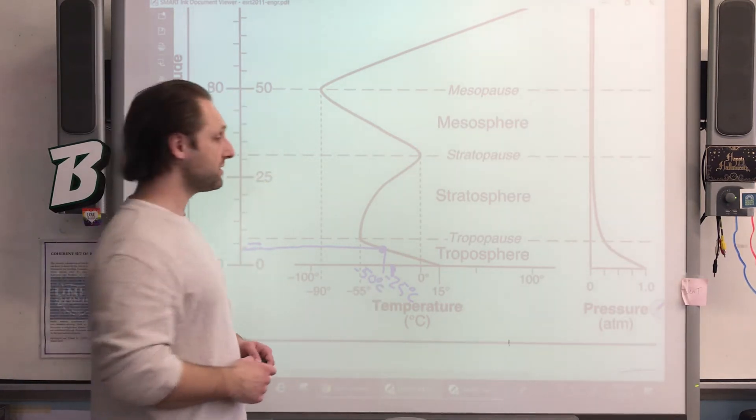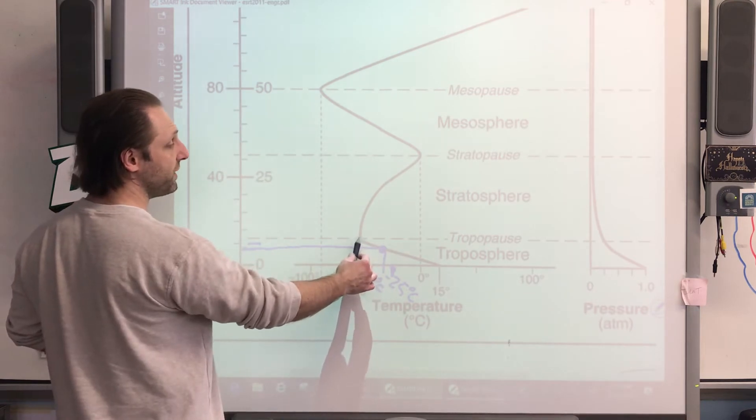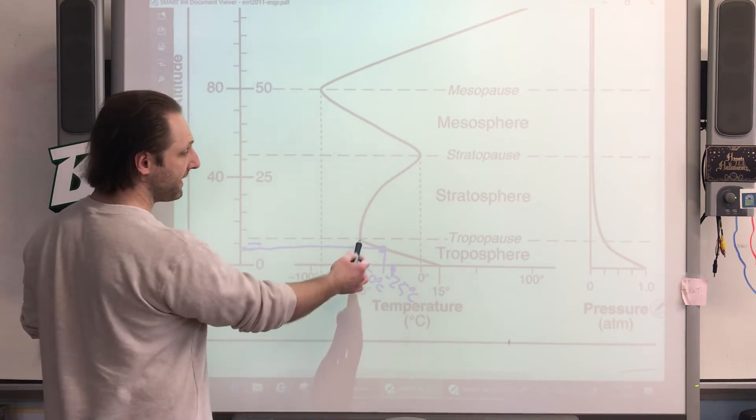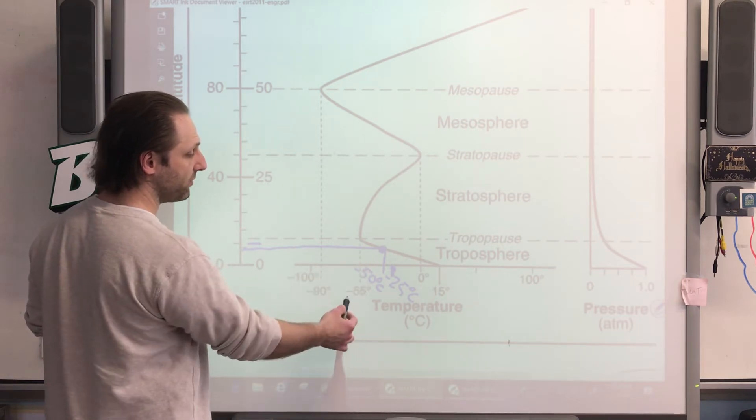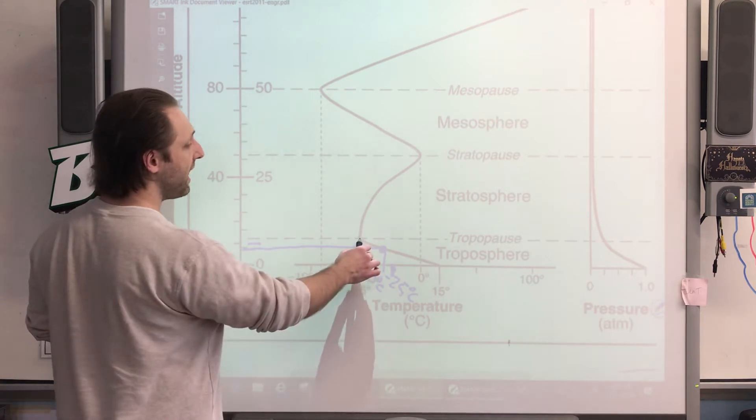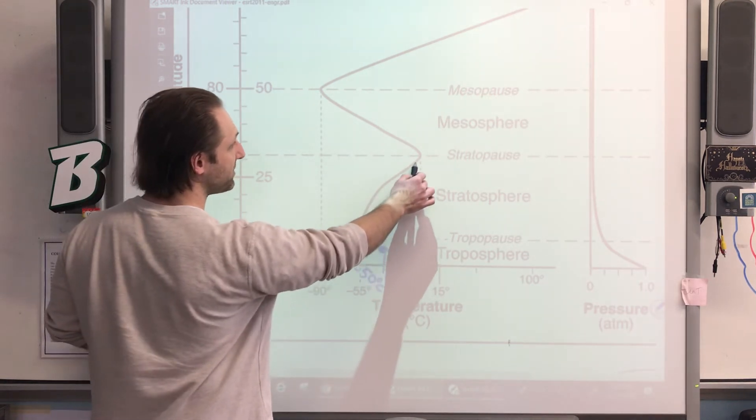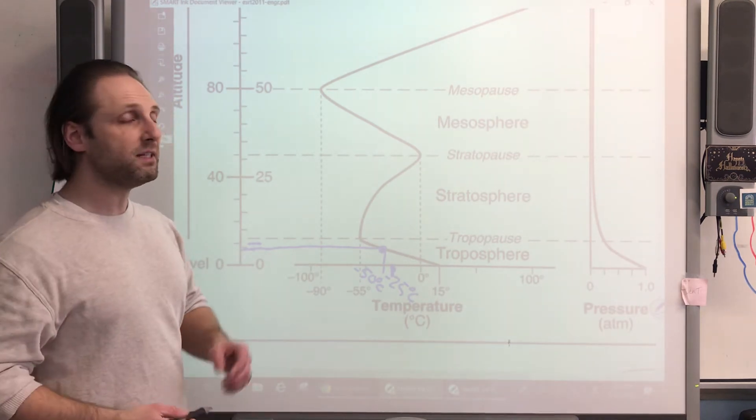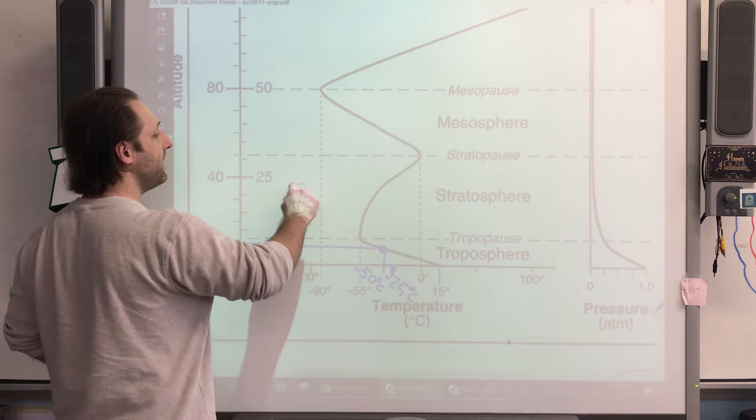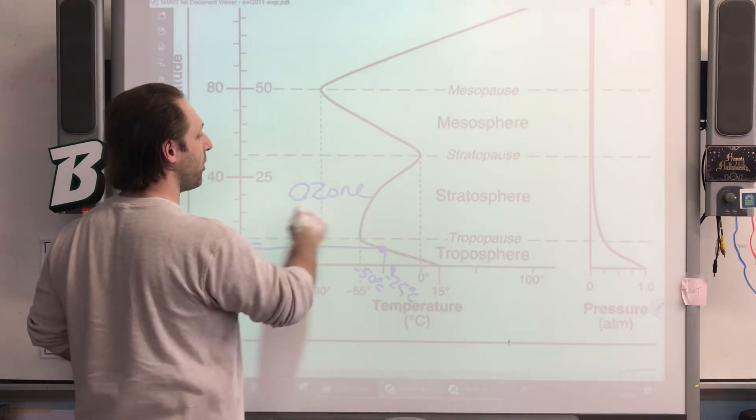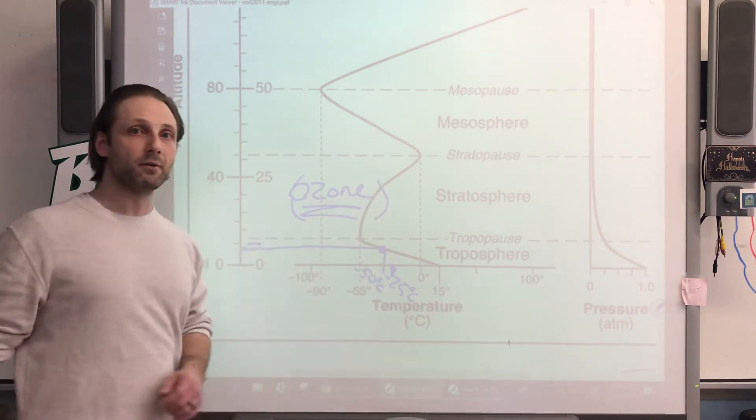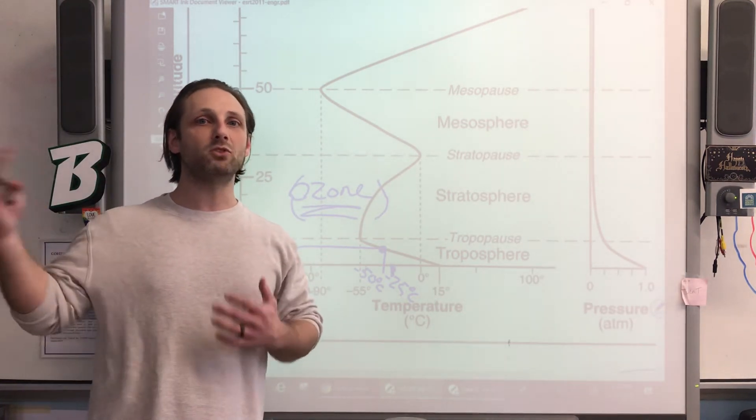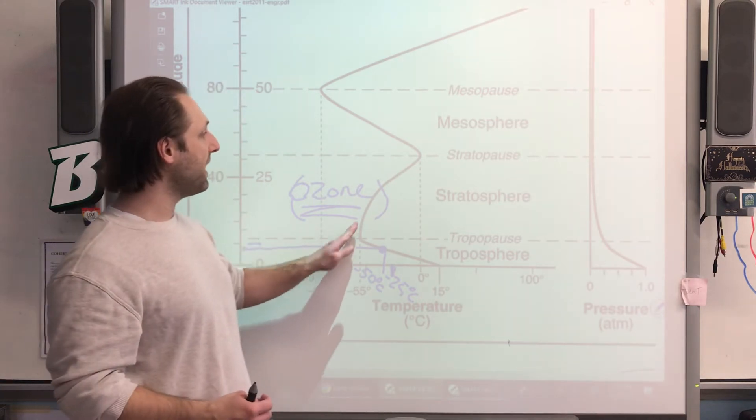All right, now as we continue, we see that we have an exchange where we are crossing the tropopause. That gives us an absolute value of negative 55 degrees Celsius on average, and then the temperature starts to increase in the stratosphere. What most of us are not aware, or maybe you are but didn't know that it was in the stratosphere, is that we have a significant amount of ozone in this area here. So there are indeed chemical molecules that can be excited by solar radiation, causing there to be a temperature increase.